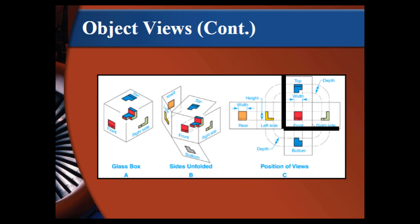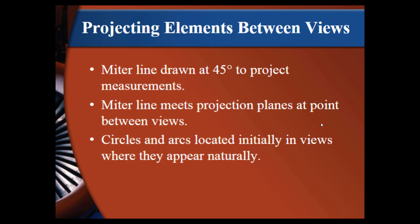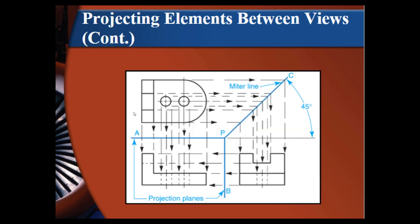How do we project between items? The next slide will show a demonstration of this. Typically, you're going to have a miter line drawn at 45 degrees to project measurements. The miter line meets projection planes at a point between views. The circles and arcs are located initially in views where they appear naturally. If we look at this diagram, if you notice we have a horizontal line and we have a vertical line. Our drawings are spaced equally apart from those lines. Where that intersection happens, we have the miter line that they talked about that was at 45 degrees. Let's say, for example, I know my front view.